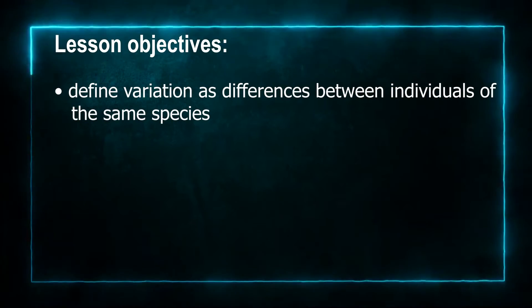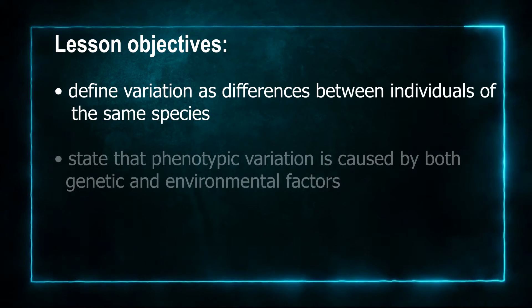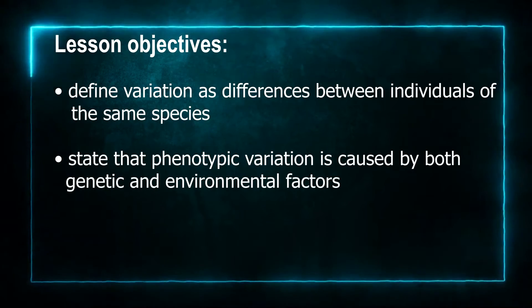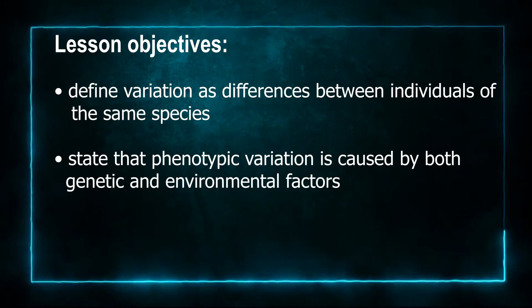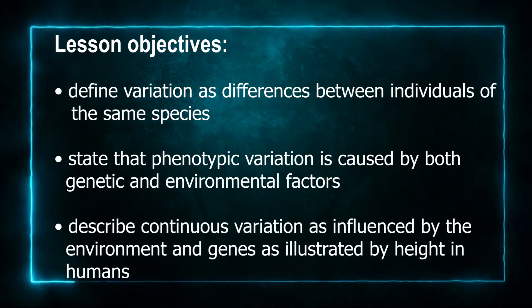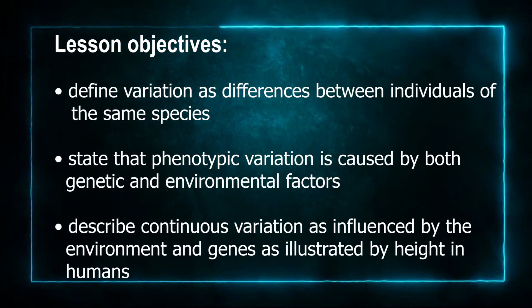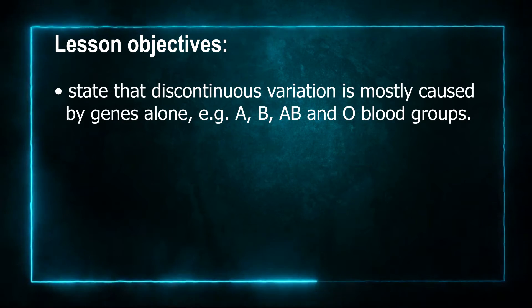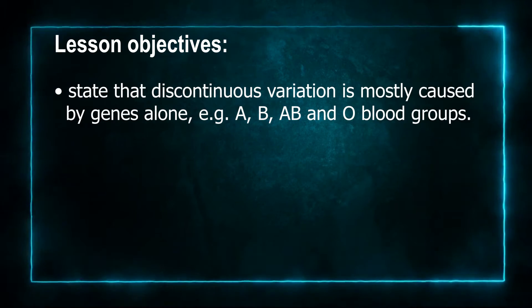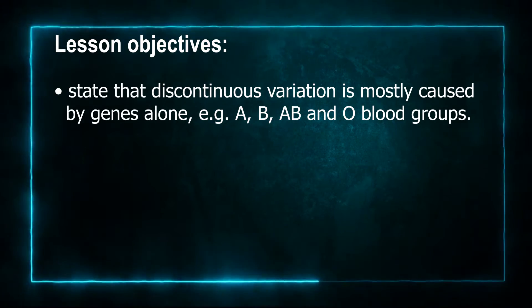Learning objectives are: define variation as differences between individuals of the same species; state that phenotypic variation is caused by both genetic and environmental factors; describe continuous variation as influenced by the environment and genes, as illustrated by height in humans; and state that discontinuous variation is mostly caused by genes alone — examples being blood groups A, B, AB, and O.